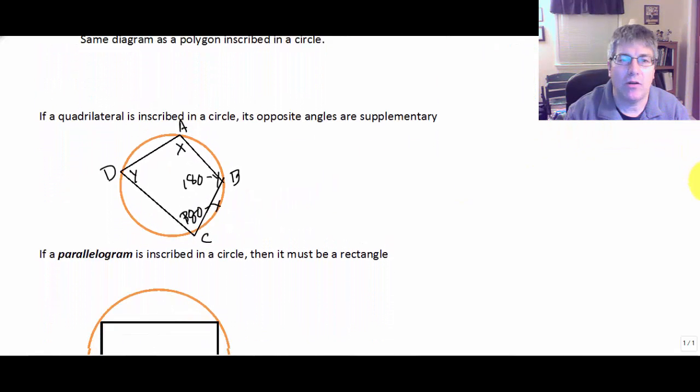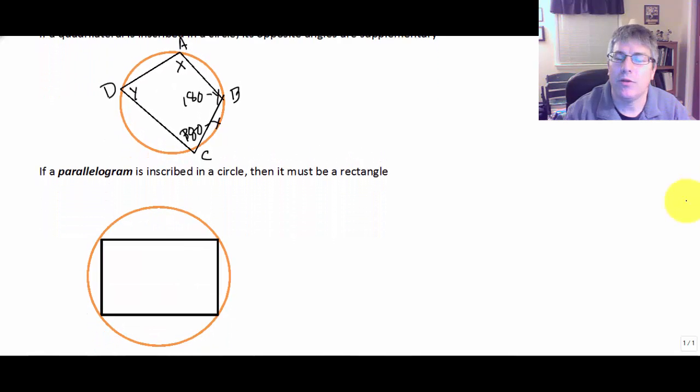And that's if it's a quadrilateral. We have to be careful because we also have a property that if a parallelogram is inscribed in a circle - so now we've got some specific qualities of the quadrilateral, that is, both pairs of opposite sides are parallel and both pairs of opposite sides are congruent - if a parallelogram is inscribed in a circle, then it has to be a rectangle.